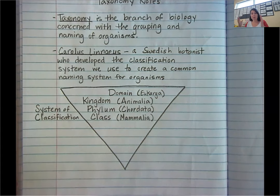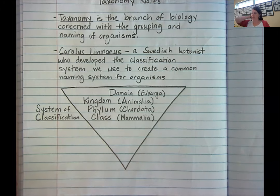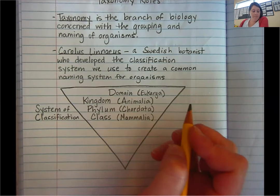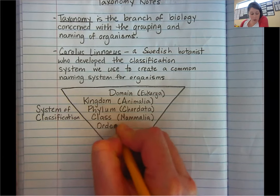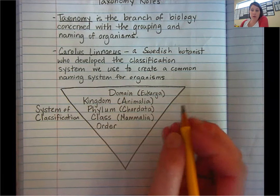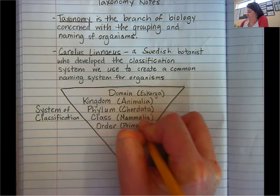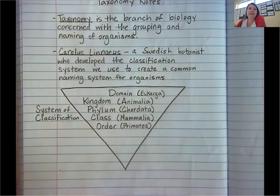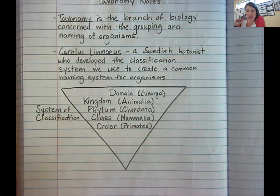Each one of these levels has multiple layers that something could fall into. The next one was Order. For us, we're Primates. Primates are mammals with collarbones and grasping fingers.